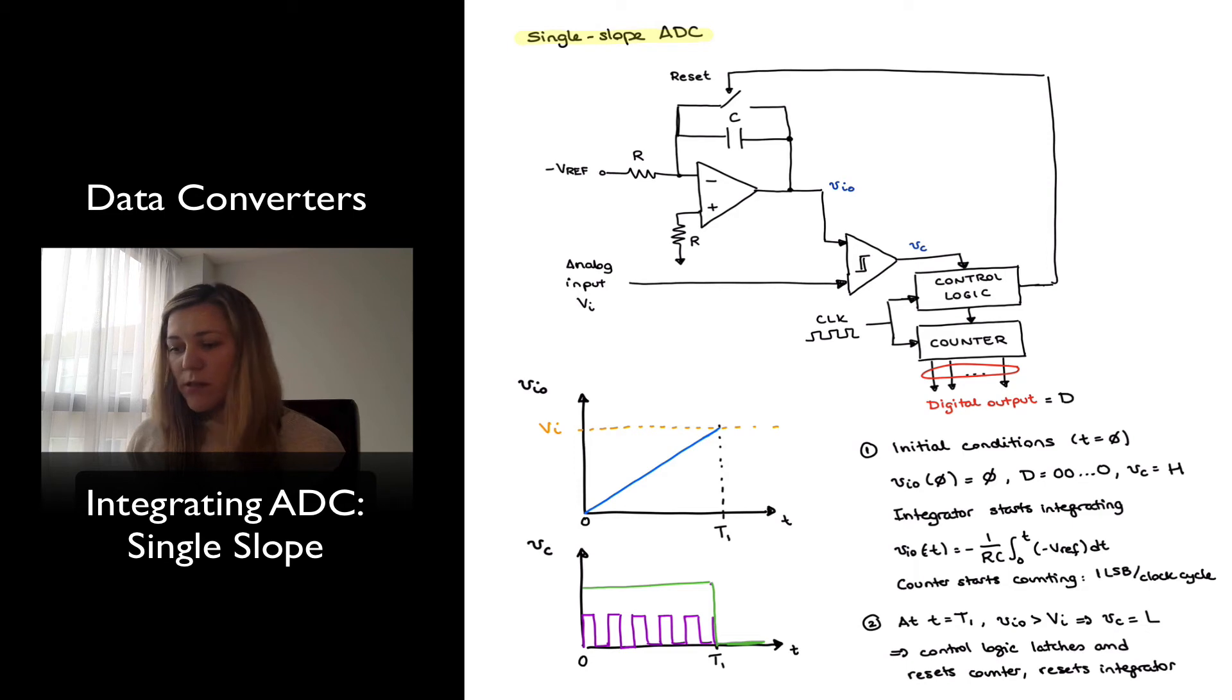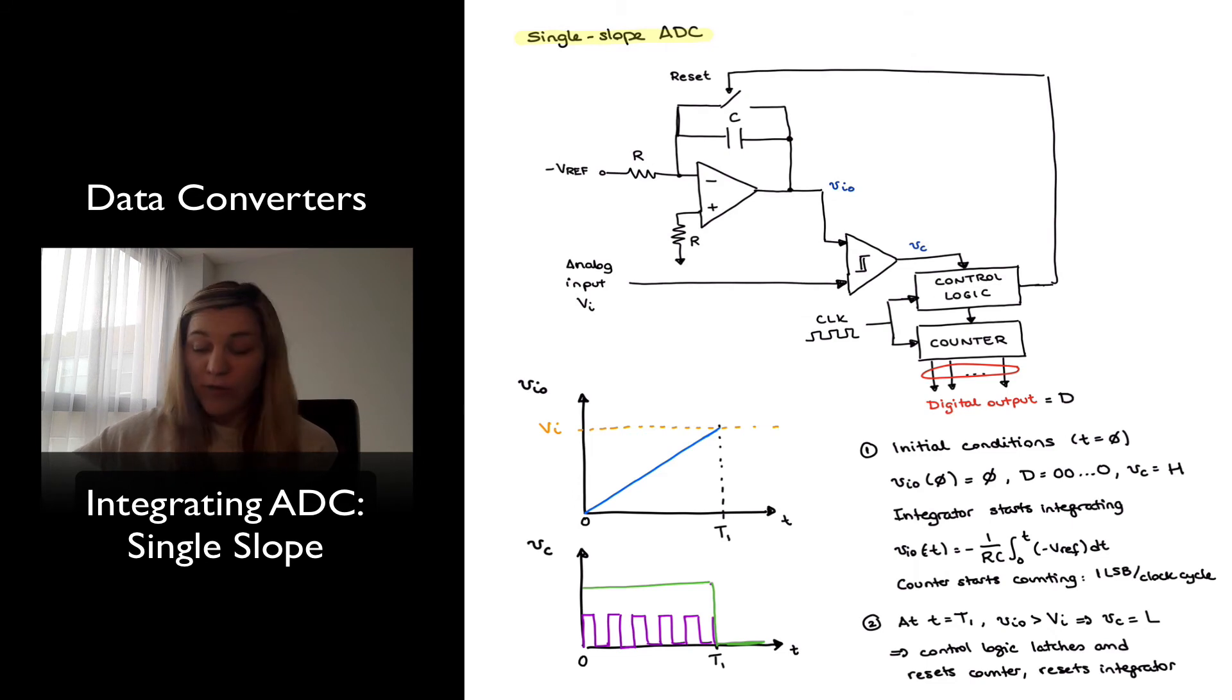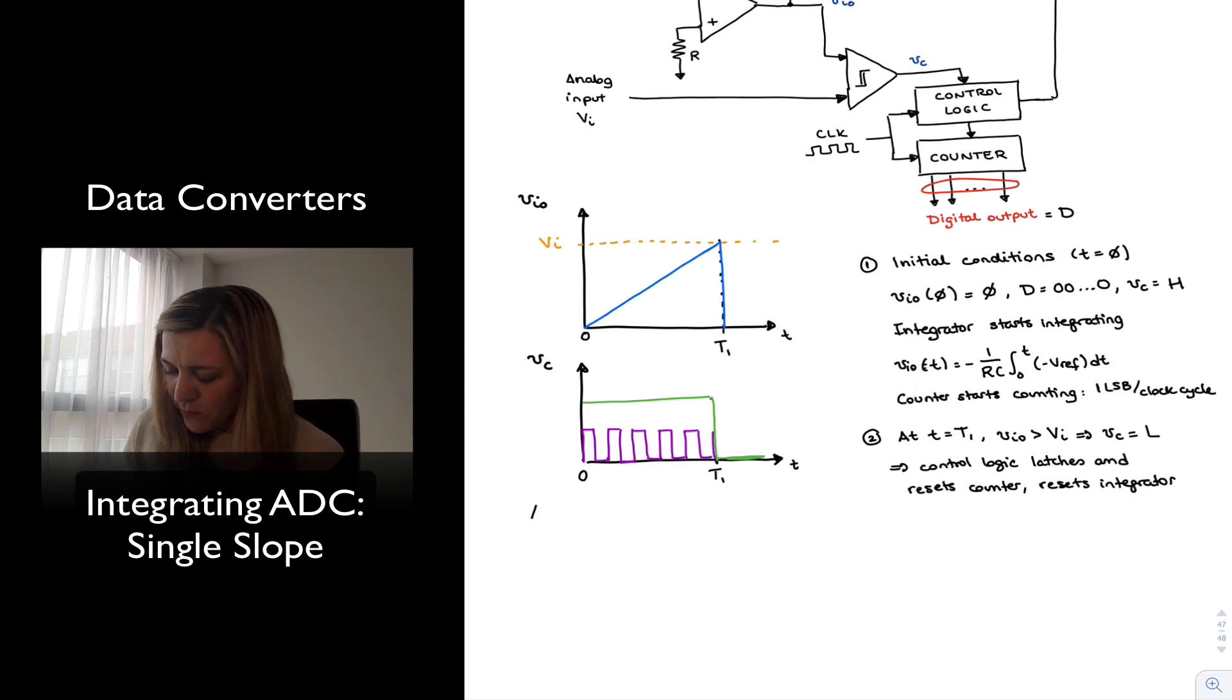So if I want to know what is the value of my T1, which is essentially the time that it's taken me for my integrator, for my output of the integrator to reach the value of V in, at T1 my digital word D, my digital output is proportional to V in. How do I know that? Well, because I know that this duration T1 is equal to a number of clock cycles. And that number of clock cycles, I know that I'm increasing my digital input signal by one LSB per clock cycle. So I can calculate T1 as being equal to V in divided by the size of the LSB times my clock period.